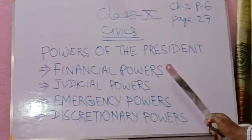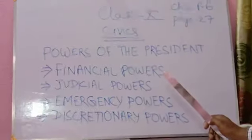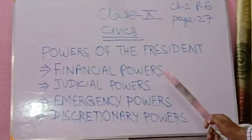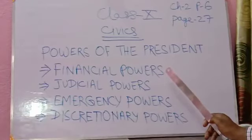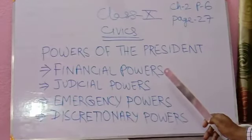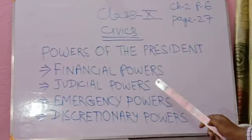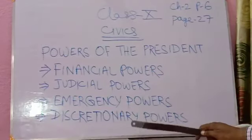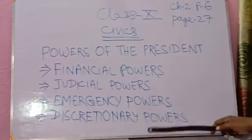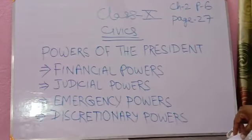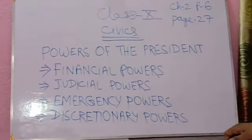Regarding duration — the national emergency, after approval of the parliament, remains in force for six months. From the date of approval, the proclamation may be revoked earlier by the president if a resolution is passed by the Lok Sabha with a simple majority to disapprove its continuance. The president can approve the continuance of the emergency for a maximum period of six months at a time.